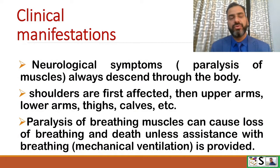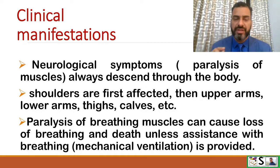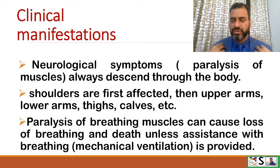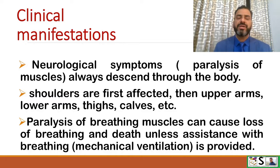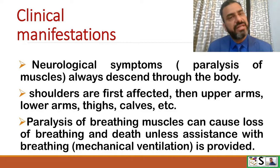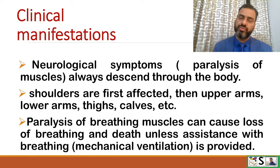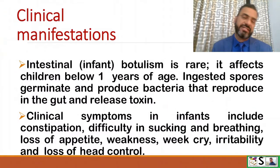Neurological symptoms include paralysis of muscles that descends through the body — first the upper part is affected, then the lower part. Shoulders are first affected, then upper arms, lower arms, thighs, calves, etc. Paralysis of the breathing muscles can cause loss of breathing and even death unless assistance with breathing or mechanical ventilation in the ICU is provided.